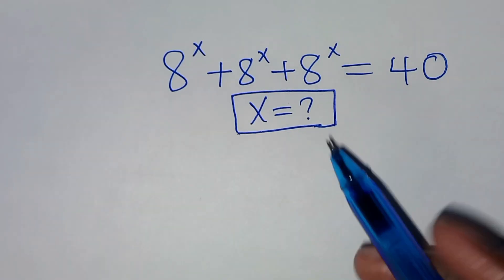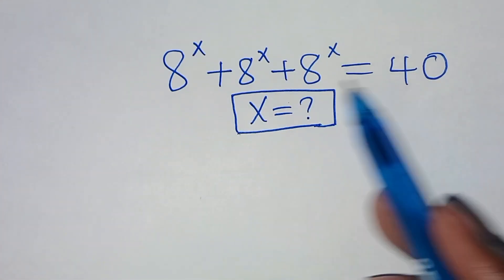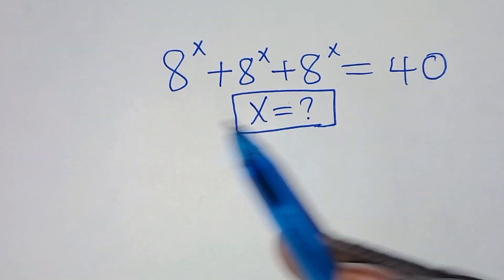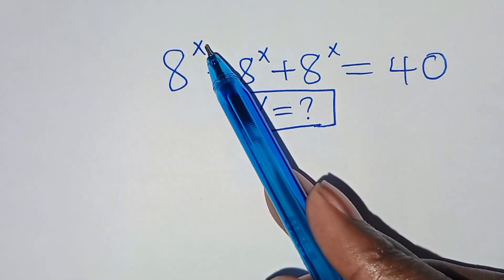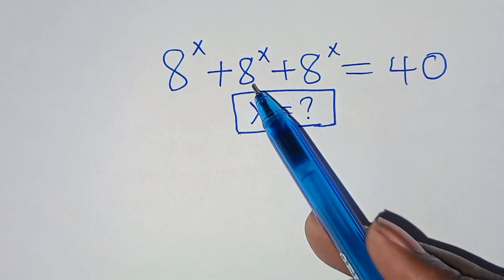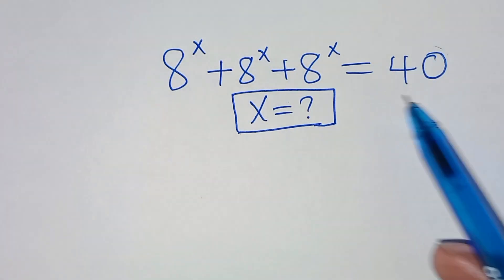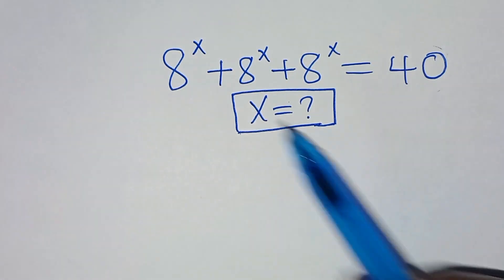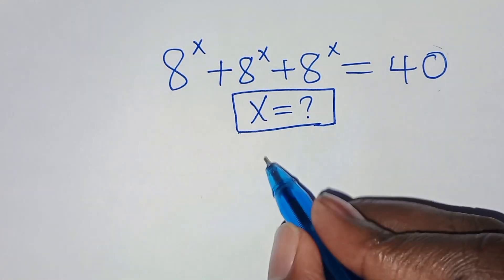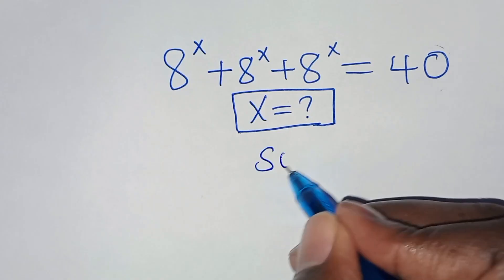Hello everyone, you are welcome to solve this nice exponential equation, which is 8 to the power x plus 8 to the power x plus 8 to the power x, and this is equal to 40. What is the value of x?